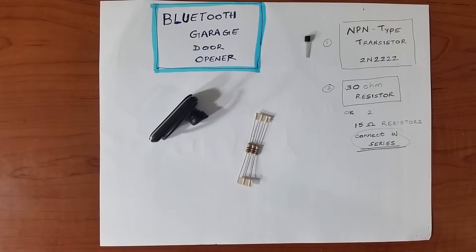The next thing you need is a 30 ohm resistor. When I went to Radio Shack I couldn't find a 30 ohm resistor, so what I did was I got two 15 ohm resistors. If you do get those, make sure you connect them in series.